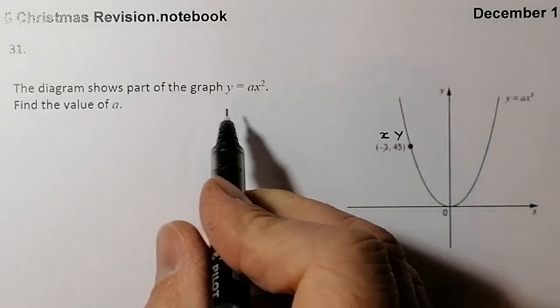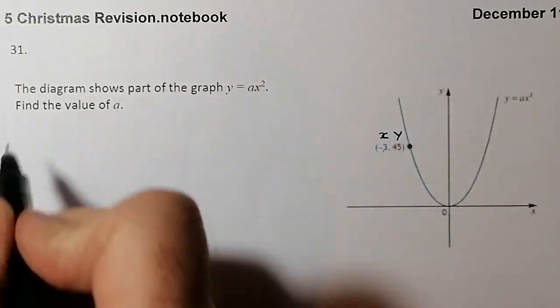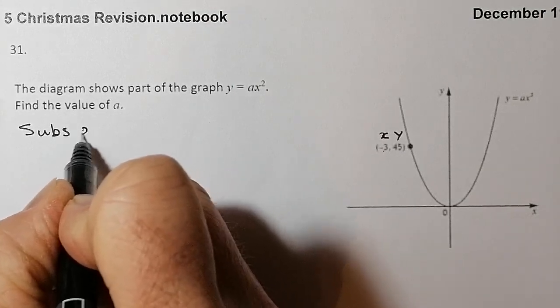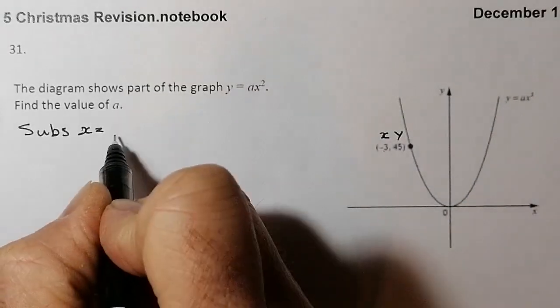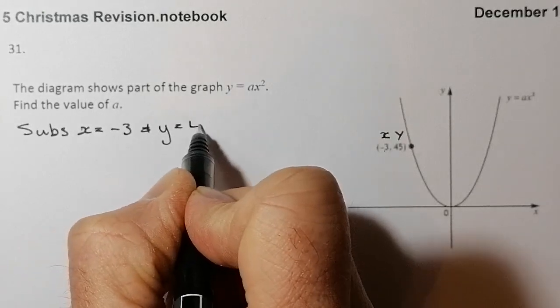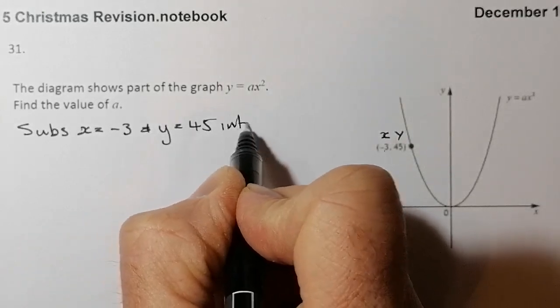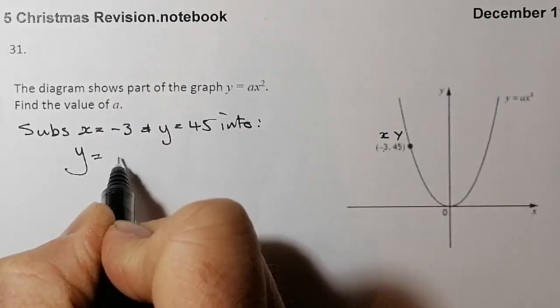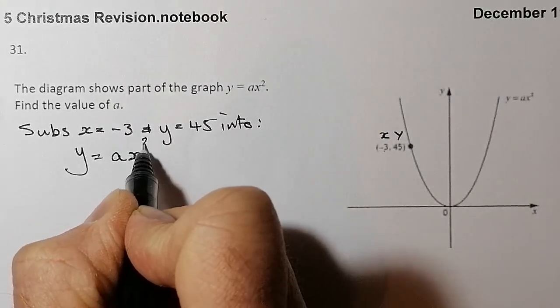So what I'm going to do is I'm going to use the equation that I've been given, and what I'm going to work out is I'm going to substitute x equals negative 3, and y equals 45 into that given equation that's there. So it's going to be into y equals ax squared.